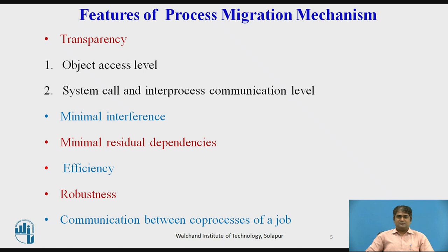The levels of transparency identified here are: object access level. Transparency at the object access level is the minimum requirement for a system to support non-preemptive process migration. If a system supports transparency at the object access level, objects such as files and devices can be accessed in a location-independent manner. Thus, the object access layer transparency allows free initiation of programs at an arbitrary node. To support transparency at object access, the system must provide a mechanism for transparent object naming and locating.